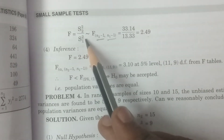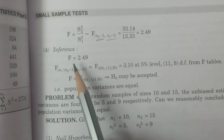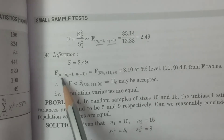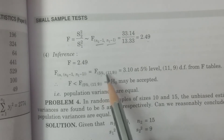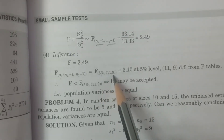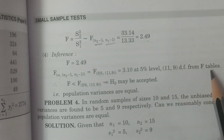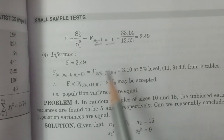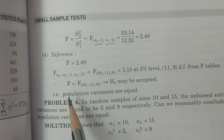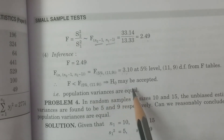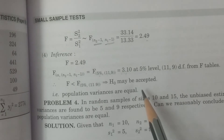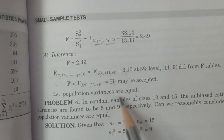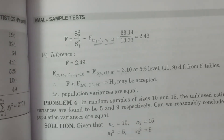For the inference step, the calculated value is F = 2.49. Since the level of significance α is not given, we use 5%. The tabulated F value at 5% with degrees of freedom (n2 − 1, n1 − 1) = (11, 9) is 3.10. Since 2.49 < 3.10, the calculated F is less than the tabulated F at 5% with (11, 9) degrees of freedom. Therefore, H0 is accepted — the two population variances are equal. That is our conclusion.